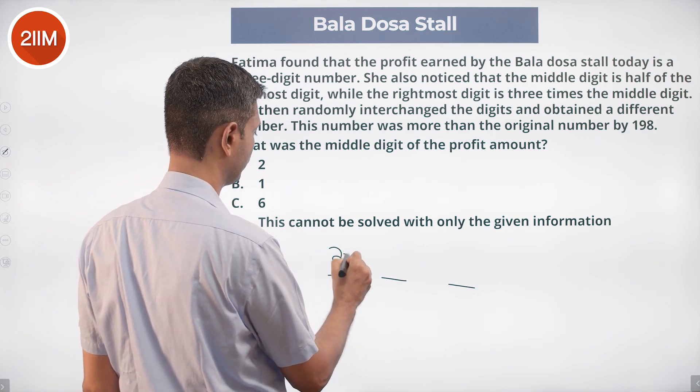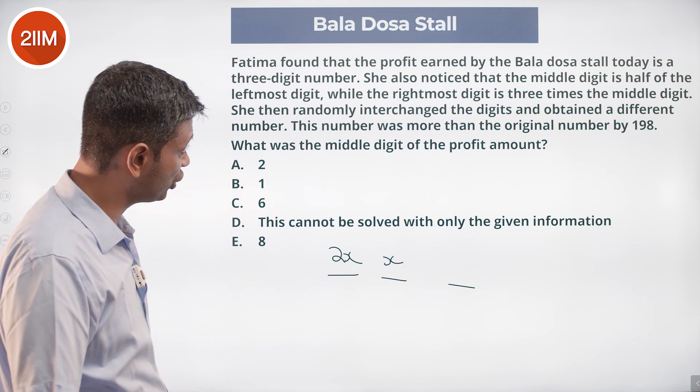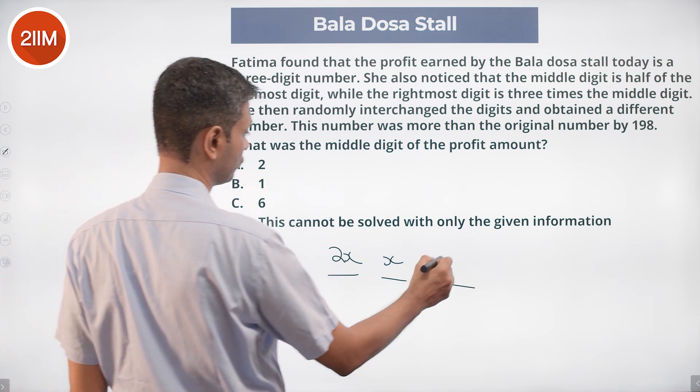This is 2x, this is x. While the rightmost digit is three times the middle digit, 3x.